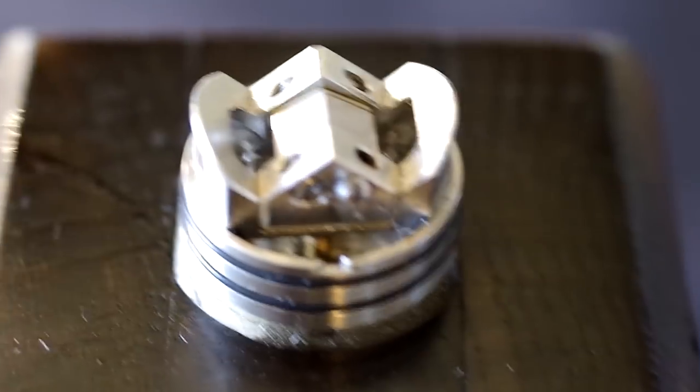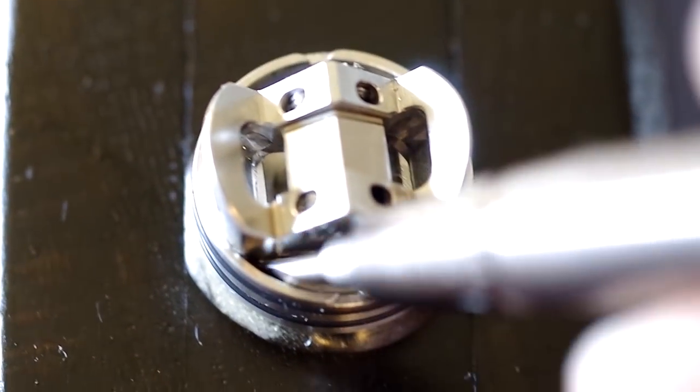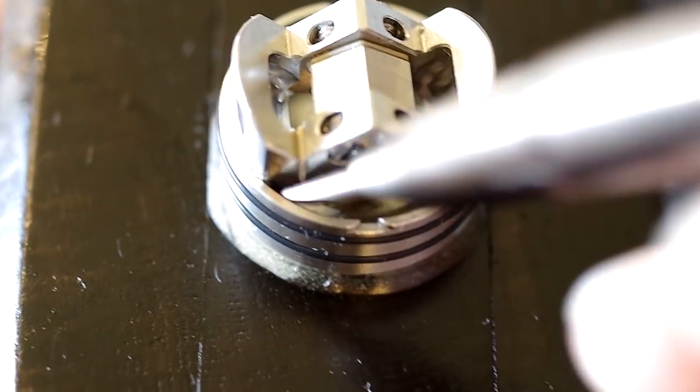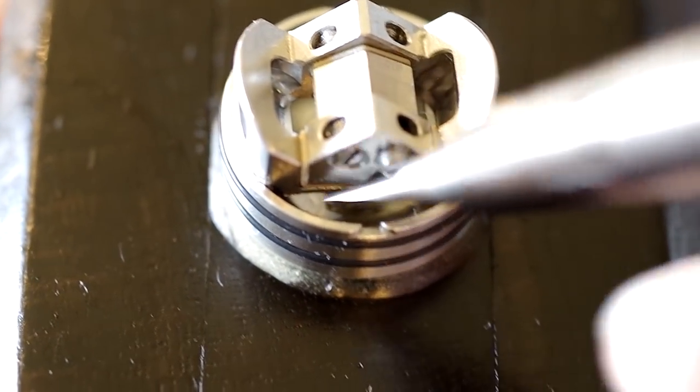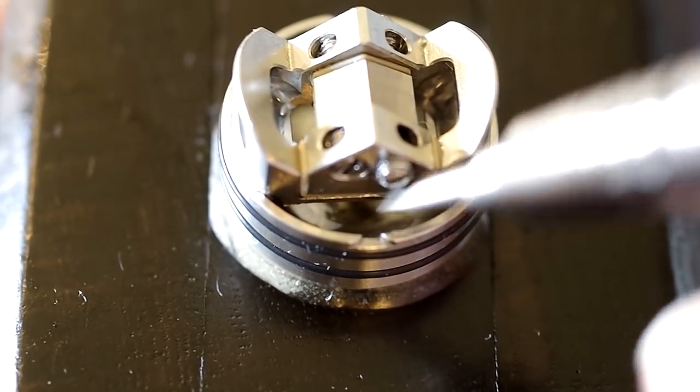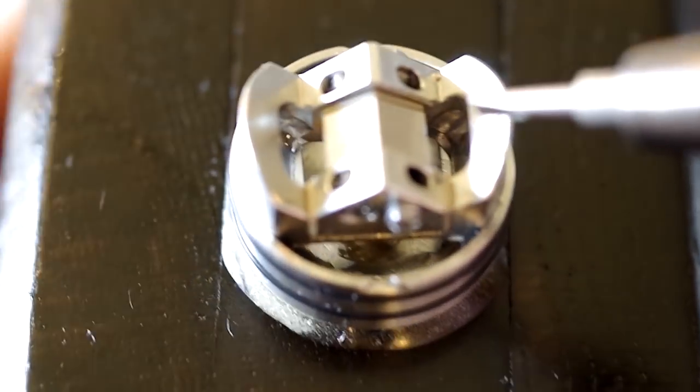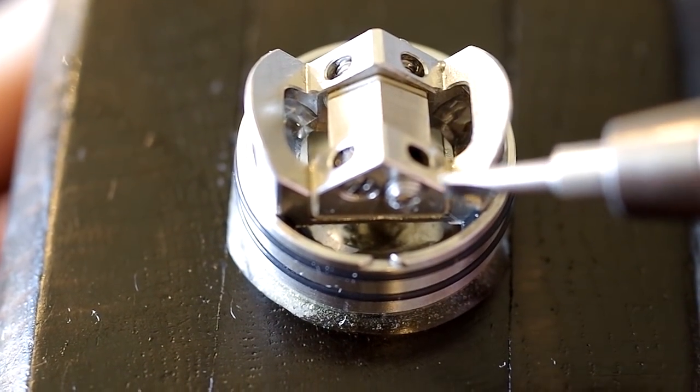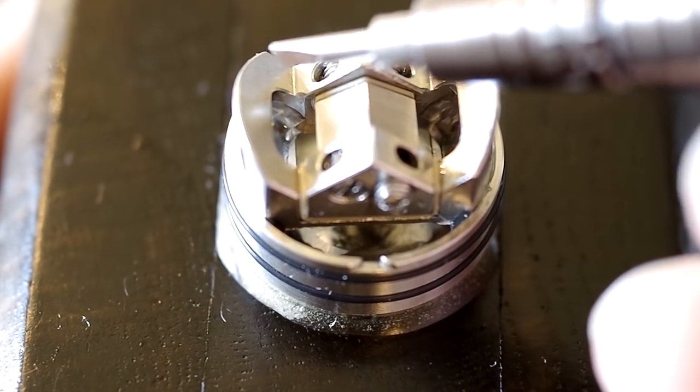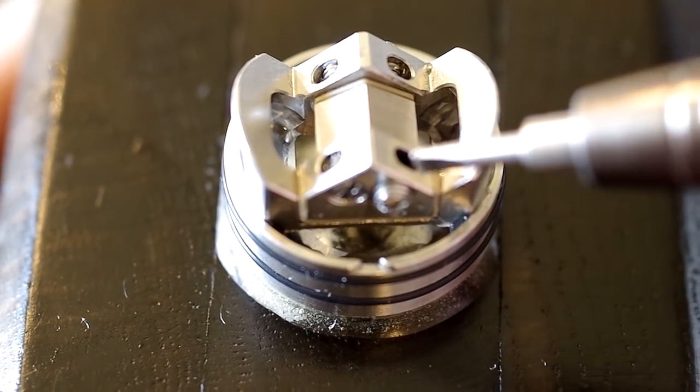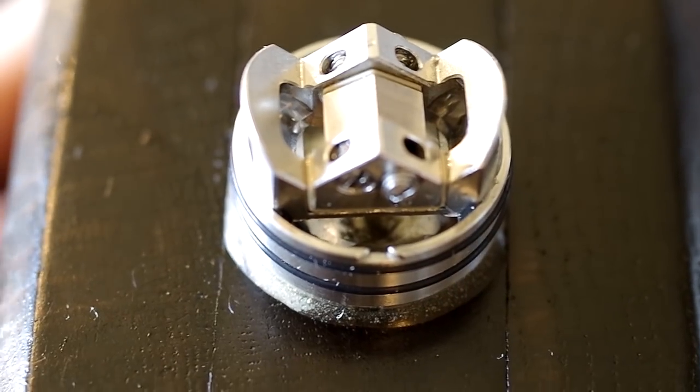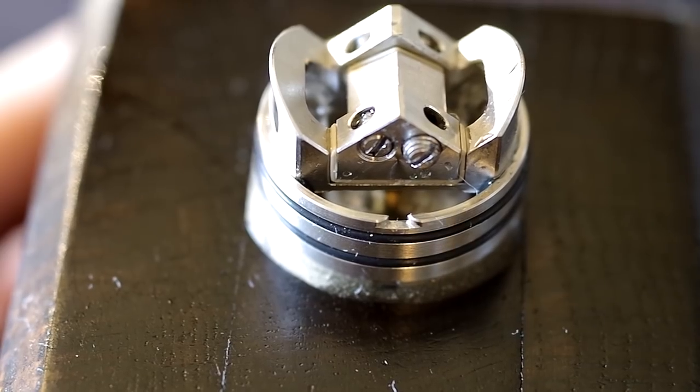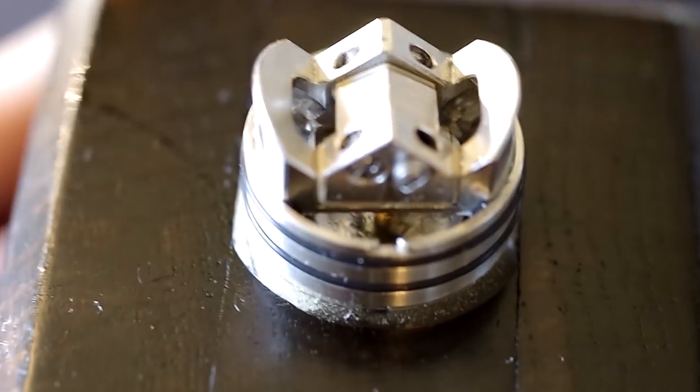And of course I forgot something. This is where you put your cotton on these two sides. And that actually means you will block off this part of the RDA. So you basically have a rectangular space under the air holes once the cotton is in place. That makes it much easier for me to reconstruct the airflow.